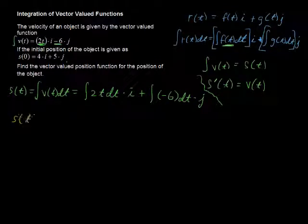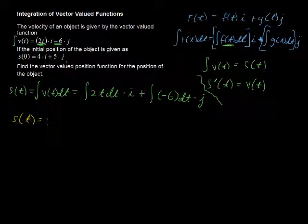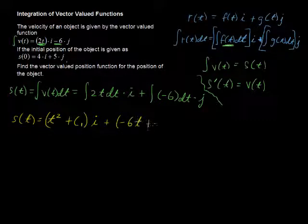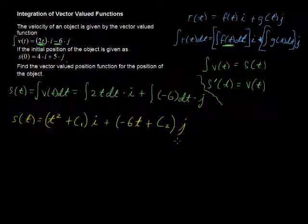s of t now equals t squared, plus the constant of integration, times i, plus negative 6t, plus a different constant of integration, times j. Alright.